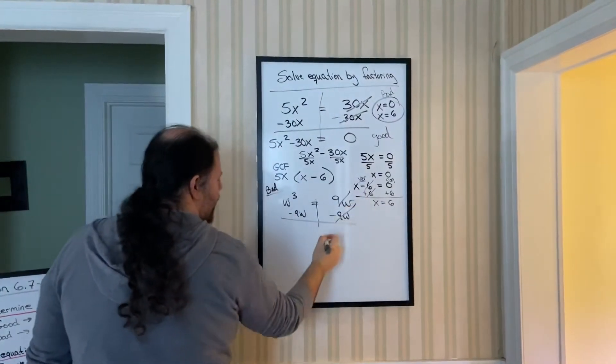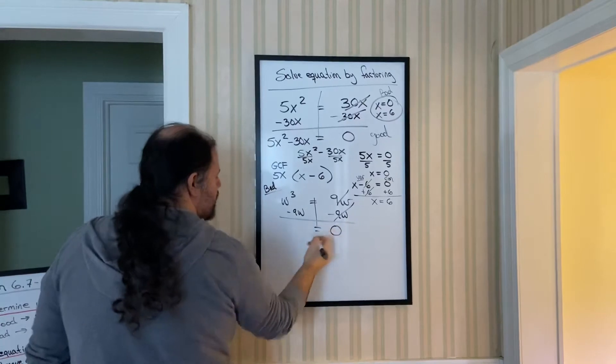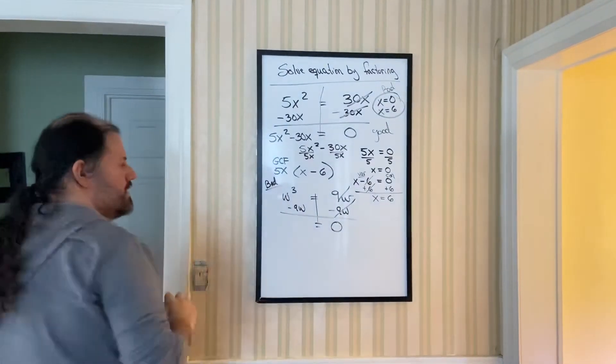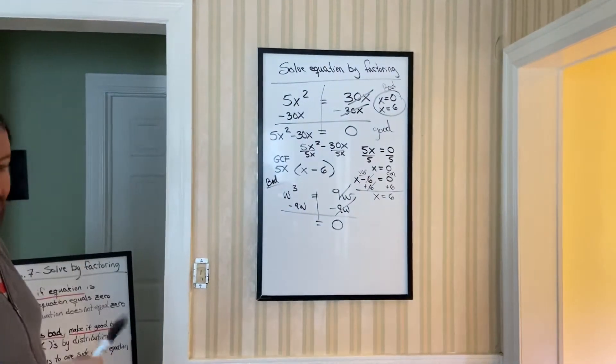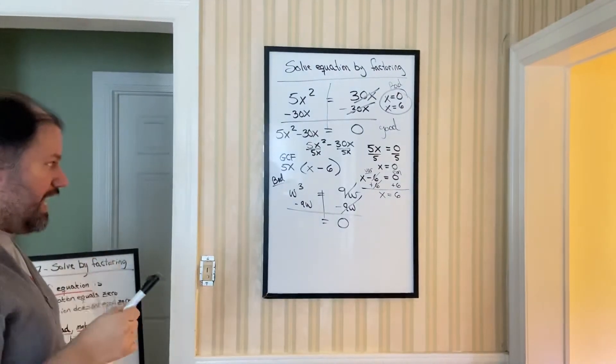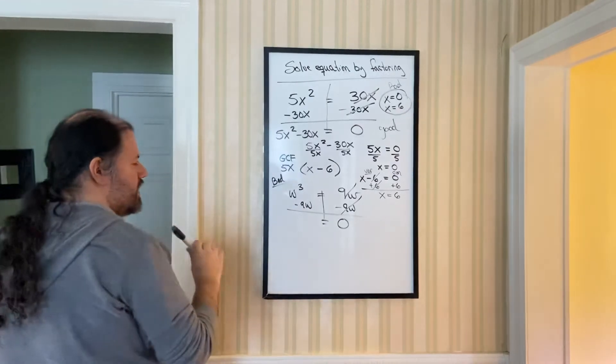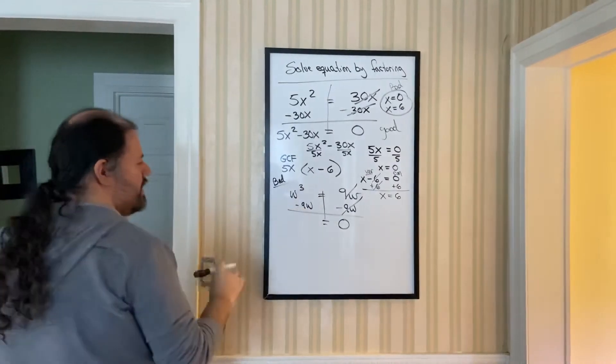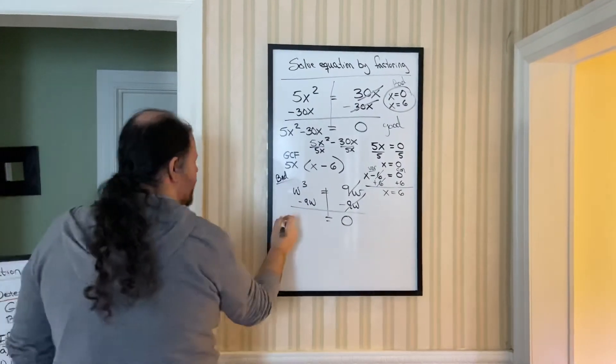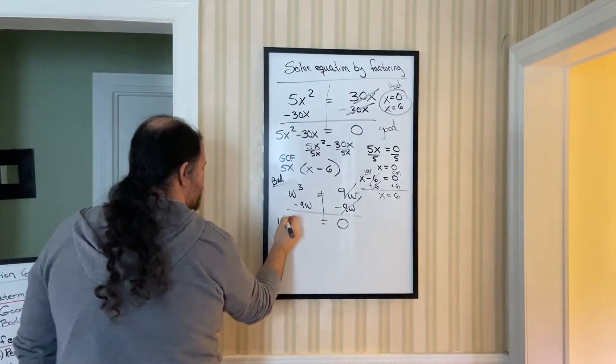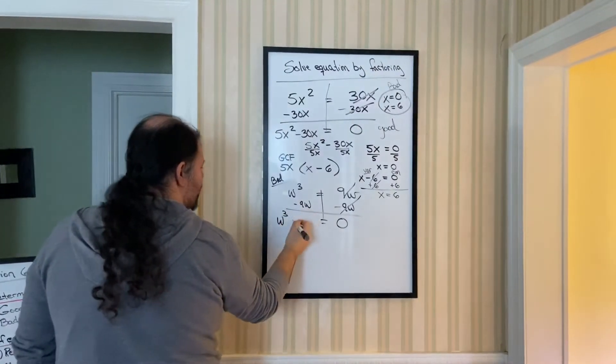These are additive inverses, so of course they're going to be 0. This and this, remember, not like terms. They're both w's, yes, but they both don't have a cube as an exponent. 3 versus 1, then they're not like terms. Put them in order. Highest degree first. Then the minus 9w.